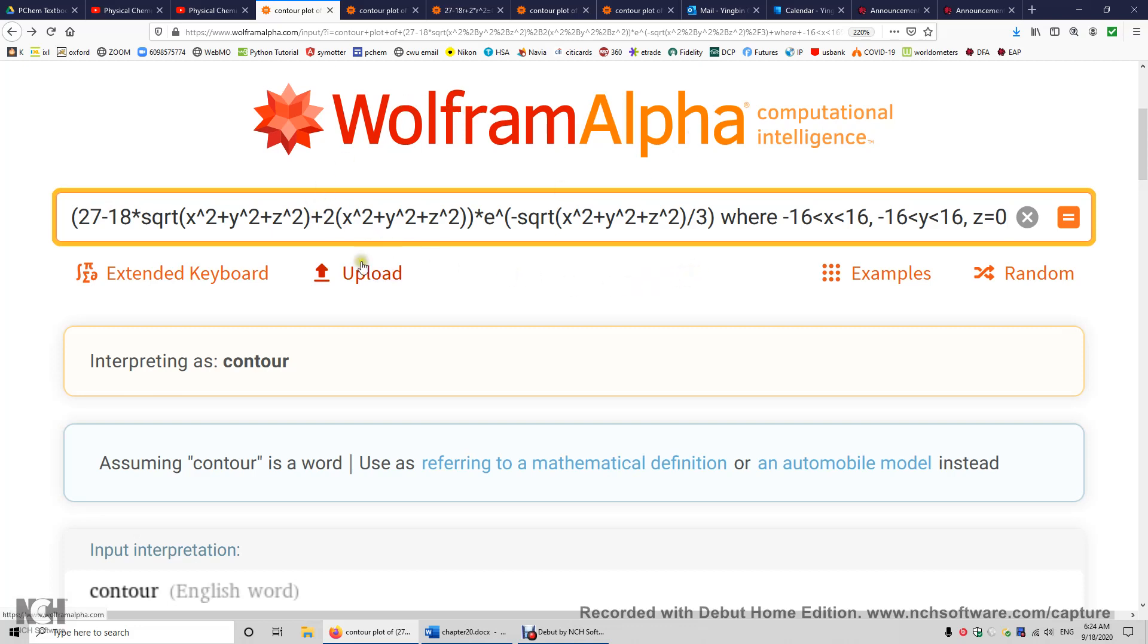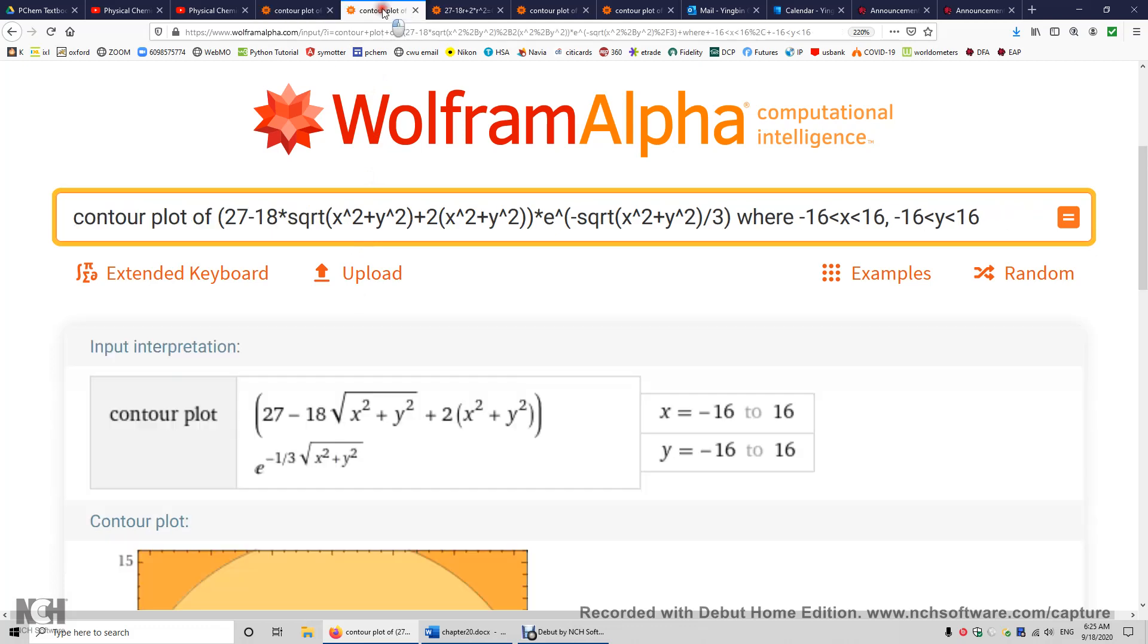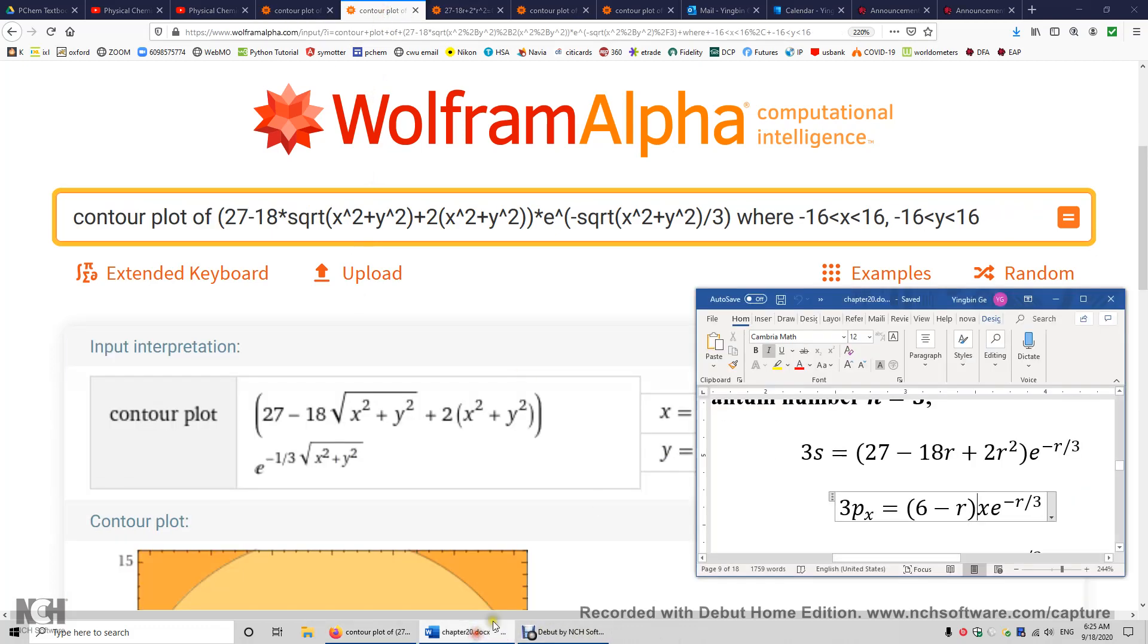Well, WolframAlpha was not able to understand the expression, interpreting as contour. It's a word. So I simplified the expression here. Again, it's this equation. But in this case, because I set z to 0 anyway, I just removed z.